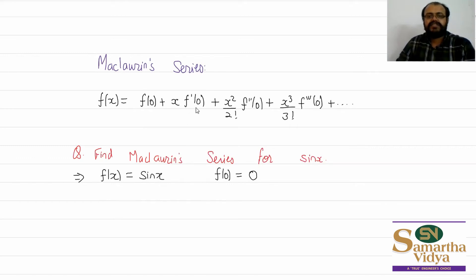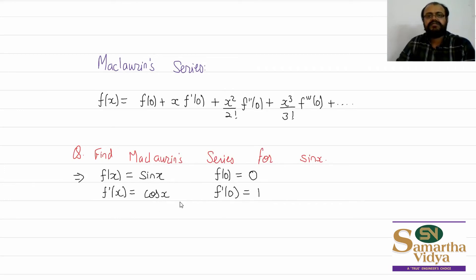The remaining terms involve derivatives of f(x). The first derivative f'(x) = cos x, and substituting x = 0 gives f'(0) = cos(0) = 1. The second derivative f''(x) = −sin x, and f''(0) = 0.